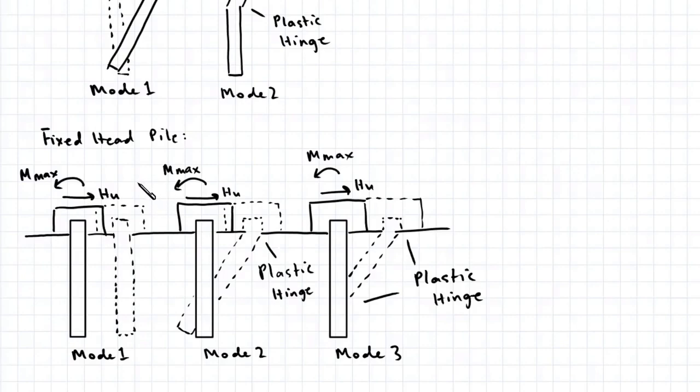In this second diagram you can see the possible failure modes for a fixed head pile. In Mode 1, the soil fails first. In Mode 2 and Mode 3, the pile experiences a structural failure and forms a plastic hinge. In Mode 3 there are two plastic hinges. Also note that because rotation is constrained in fixed head piles, we have a reaction moment in the pile cap.